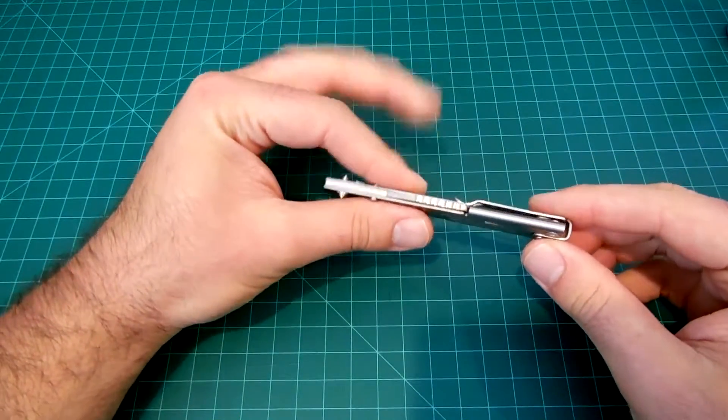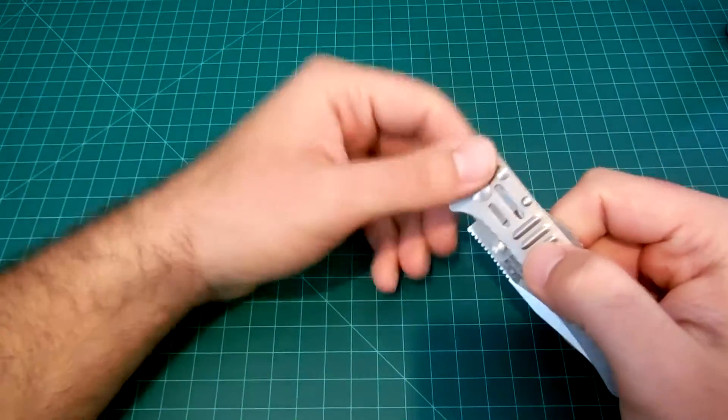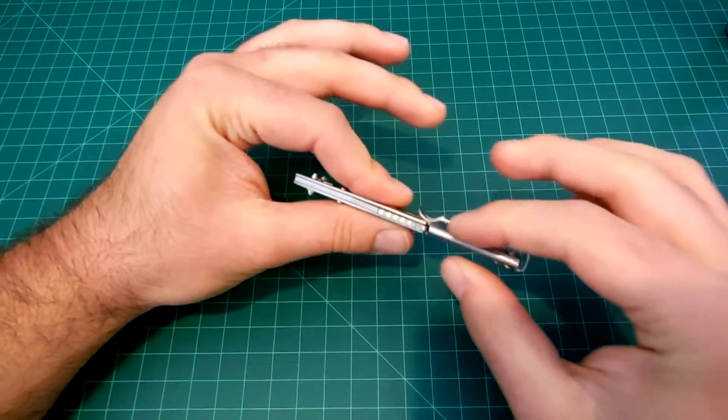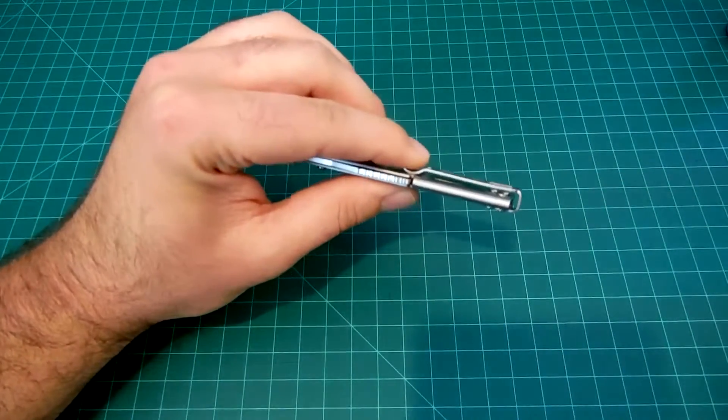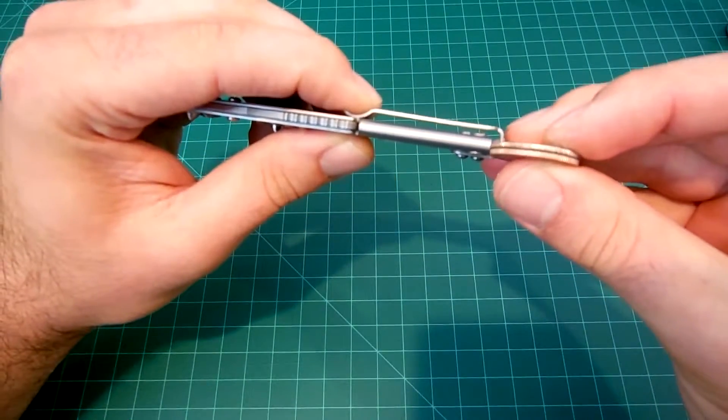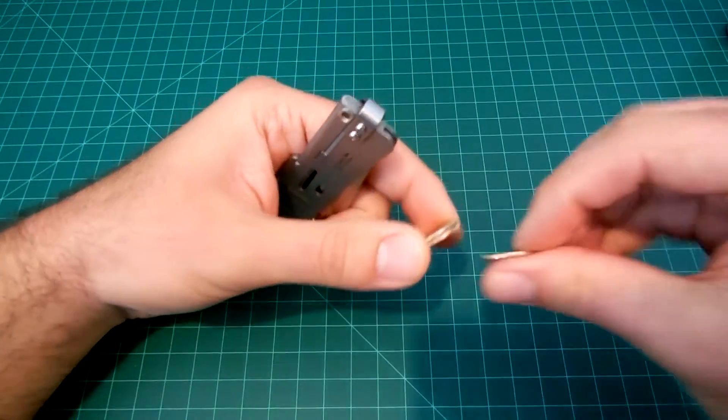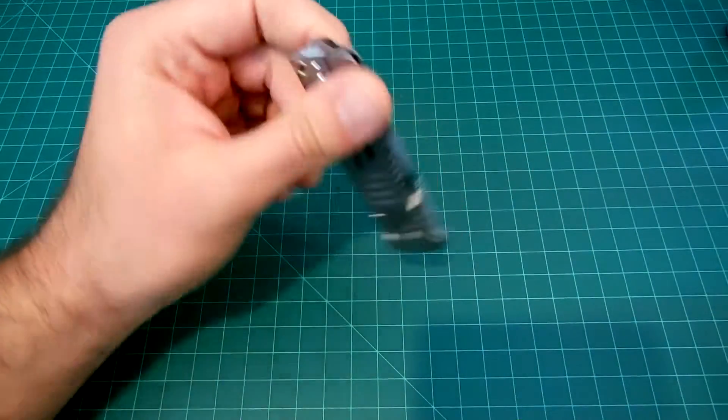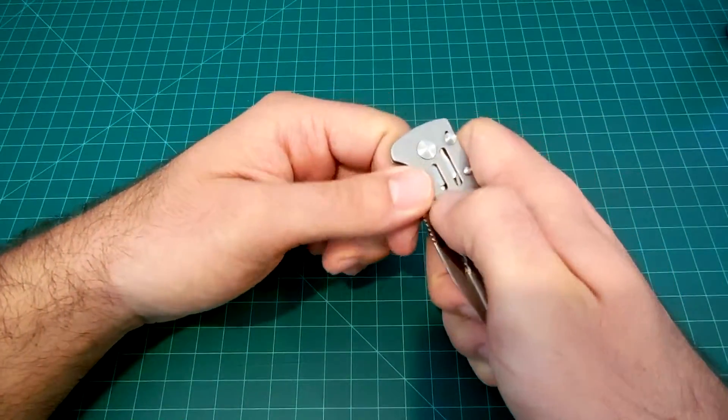Now with all those things being said, you would think that I don't like this knife, but that's actually contrary because I do like this knife. The reasons for that - for one, it's really skinny. They said it on the box that it is as skinny as two quarters put together. Well I have two quarters here. You could see it's kind of close, a little thicker than two quarters. Negating the pocket clip, I'd say it is skinnier than three quarters put together.